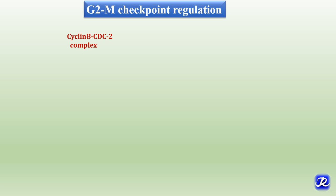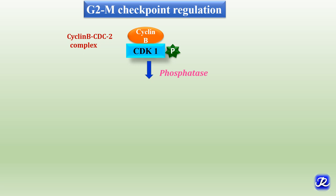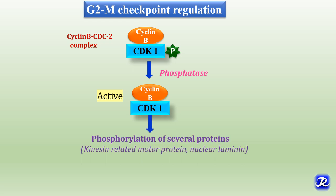Now let's see how the cell cycle is regulated at the G2/M checkpoint. It is regulated by the cyclin B CDK1 complex, also known as the cyclin B CDK2 complex, and is believed to be a rate-limiting step in eukaryotes. After its export to the nucleus, it undergoes dephosphorylation catalyzed by phosphatase and becomes active. This activated form causes phosphorylation of several proteins involved in bipolar spindle formation, ultimately resulting in mitosis.